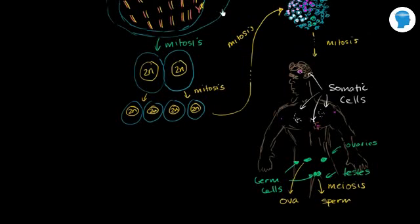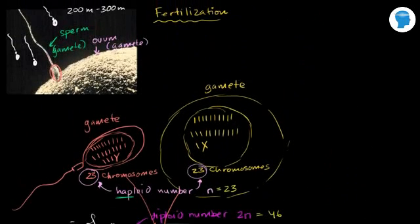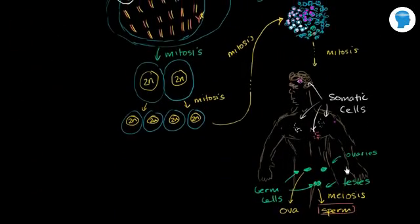So a mutation: if on the way to differentiating into gametes a mutation happens, and those cells keep replicating and differentiate into germ cells, then through meiosis that produces some mutated sperm, that has a chance of passing on to your children. It might not be all of the sperm cells that carry the mutation — it could be only a handful of the two to three hundred million sperm cells. Mutations only affect your offspring when the cells in which they happen eventually differentiate into gametes that you pass on to your children.